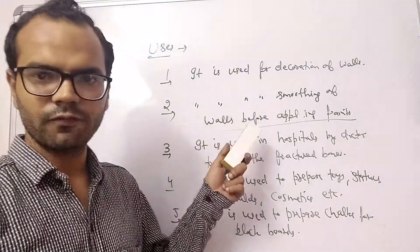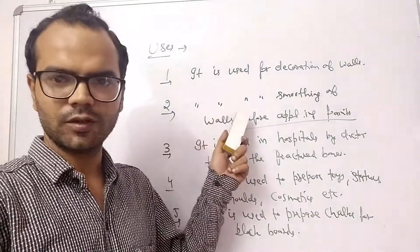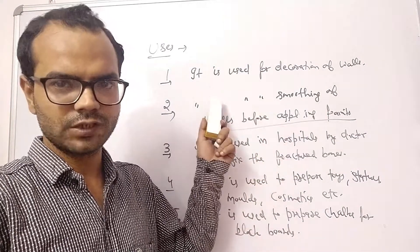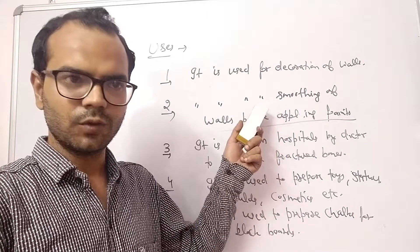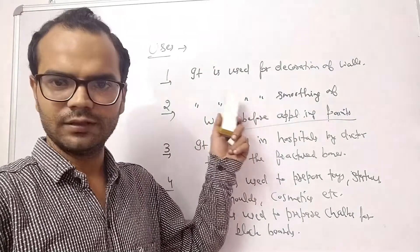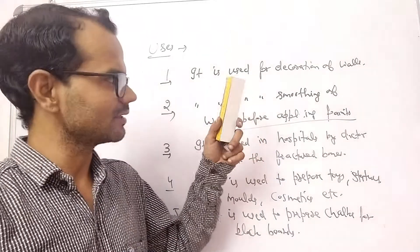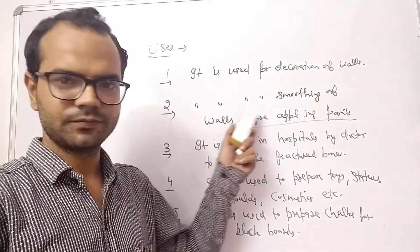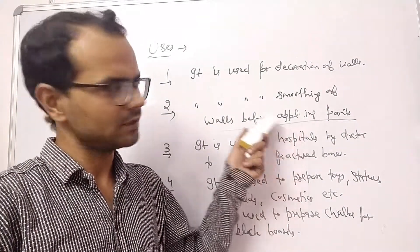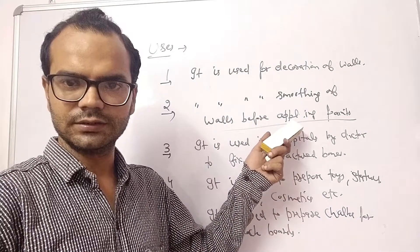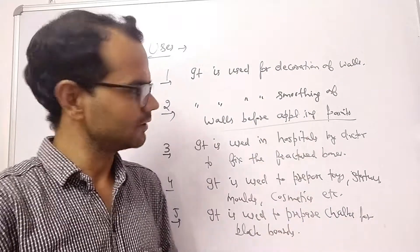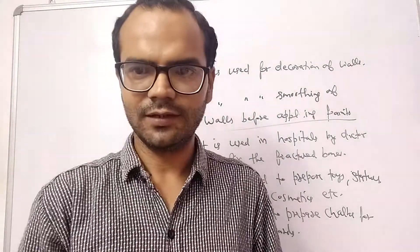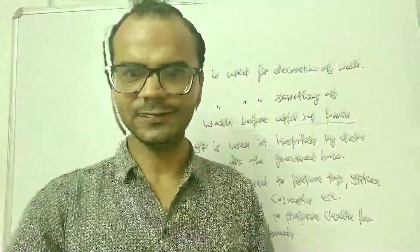An important NCERT question is: why should we store POP in a moisture-proof container? The answer is that if POP gets moisture, it will absorb water and set down into a hard mass, and its useful property will be lost. That's it for today. Keep learning and keep exploring the channel for further videos. Thank you.